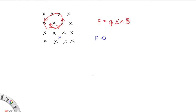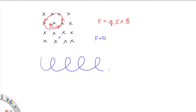What happens if it's traveling somewhere between the two — going to the right and slightly into the screen? In that case, the component to the right will cause it to follow a circular path, and the component into the screen will keep it going into the screen. So it's going to follow a corkscrew path into the screen. If we were to look at it side on, it would look something like a helix going into the screen.